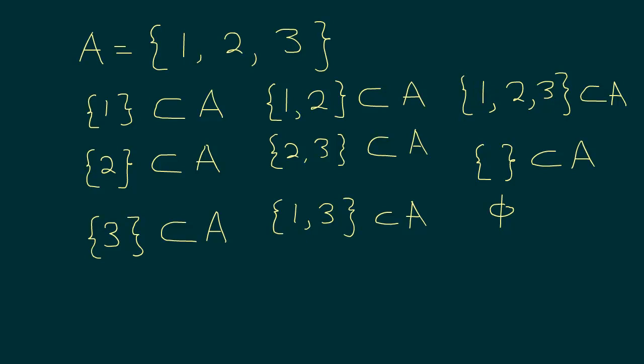So are there any other possible subsets of A? Let's see. We have written 1 as a set, 2 as a set, 3 as a set, then we have taken 2 numbers together, then 3 numbers together, and the null set. There are no other sets that we can find which can be a subset of A.